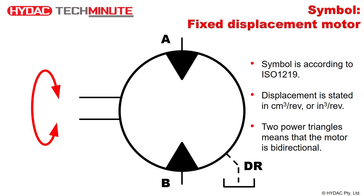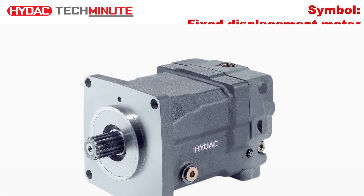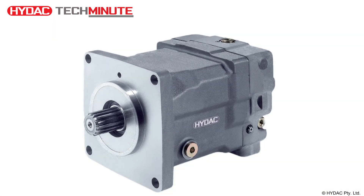Bidirectional motors usually have a drain port. This is there to relieve pressure from the mechanical seal on the shaft. So this then completes our symbol for a hydraulic motor.